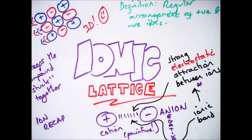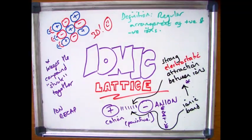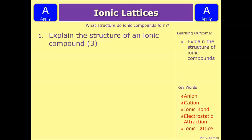And that's everything there is to know about ionic lattices and ionic bonding. So let's have a look at the apply section of this video. The apply section has one question here which says explain the structure of an ionic compound. It's worth three marks and it covers everything we've just talked about in this video. Pause it, have a go, and we'll see how you've done in a minute.